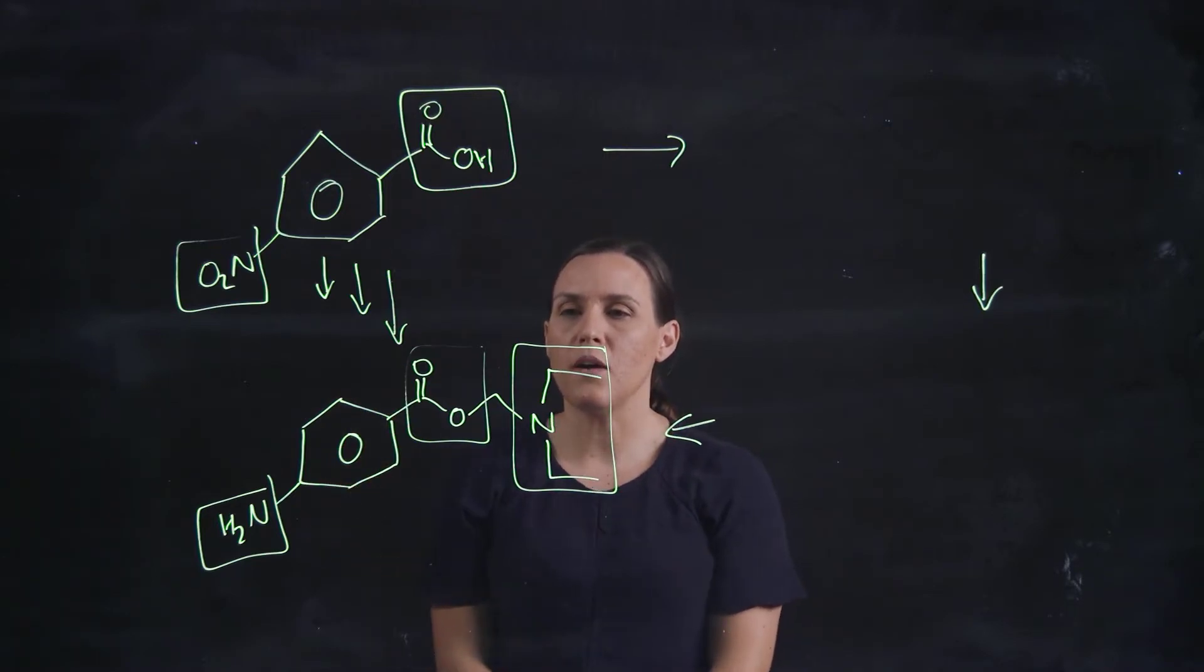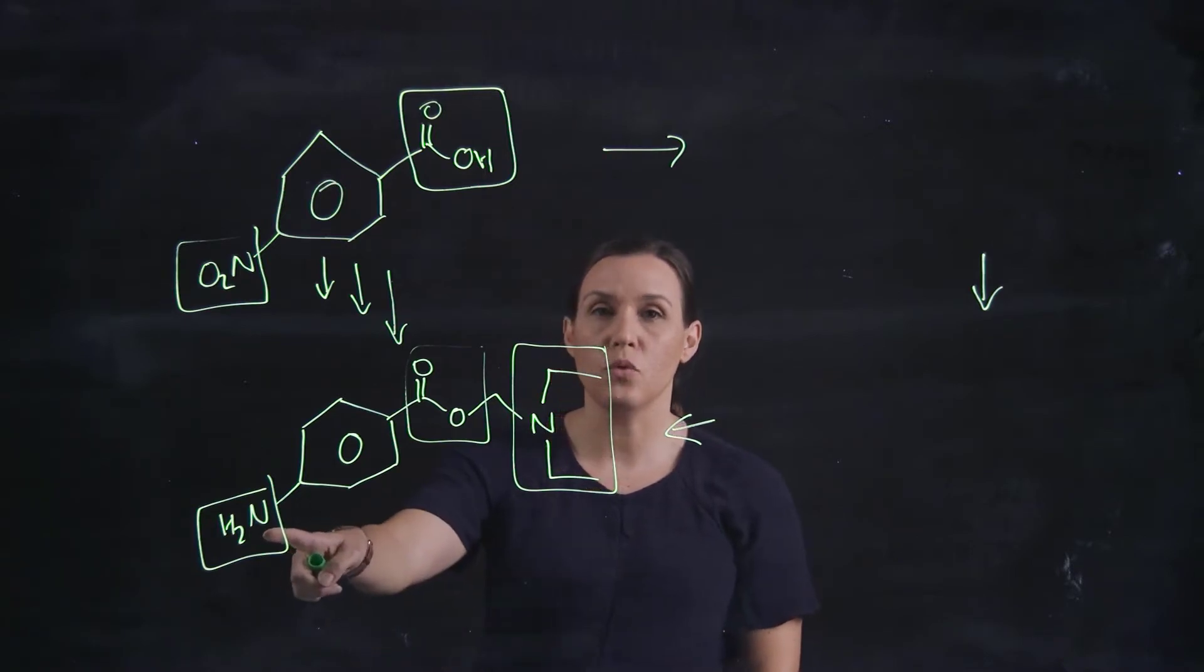So working backwards, which would be the order that you would do this? The NH2 would be the last thing that you do, okay, because it would be a reduction reaction, so it would reduce anything that's happening in the scheme. So save that till last.